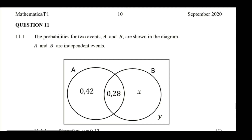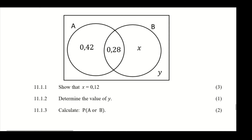Now we are going to do question 11. Question 11.1 says that the probabilities of two events A and B are shown in the diagram. A and B are independent events, and all the probabilities are shown in the event diagram.